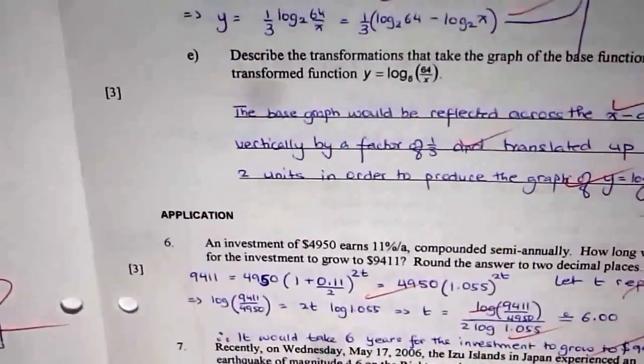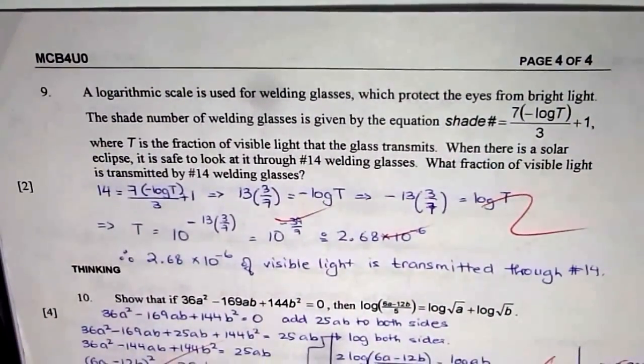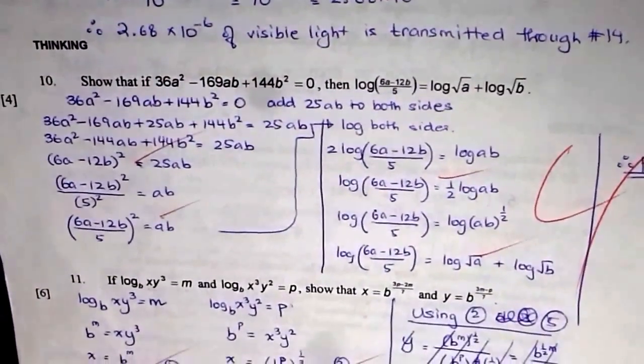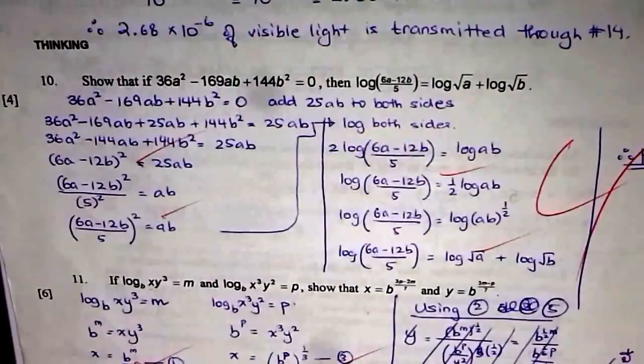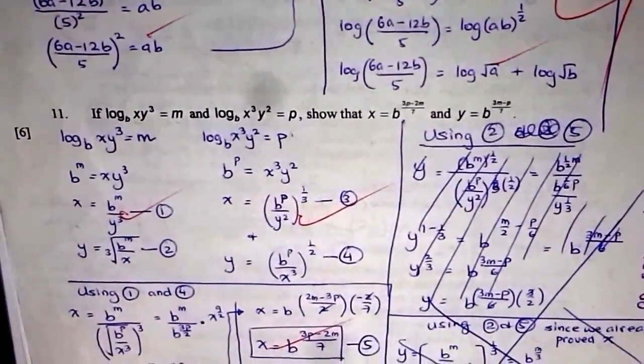Now here's the last page. That's question number nine on application. And then we have two excellent questions on thinking. That's your thinking question. And the last question of the test paper is question number 11.